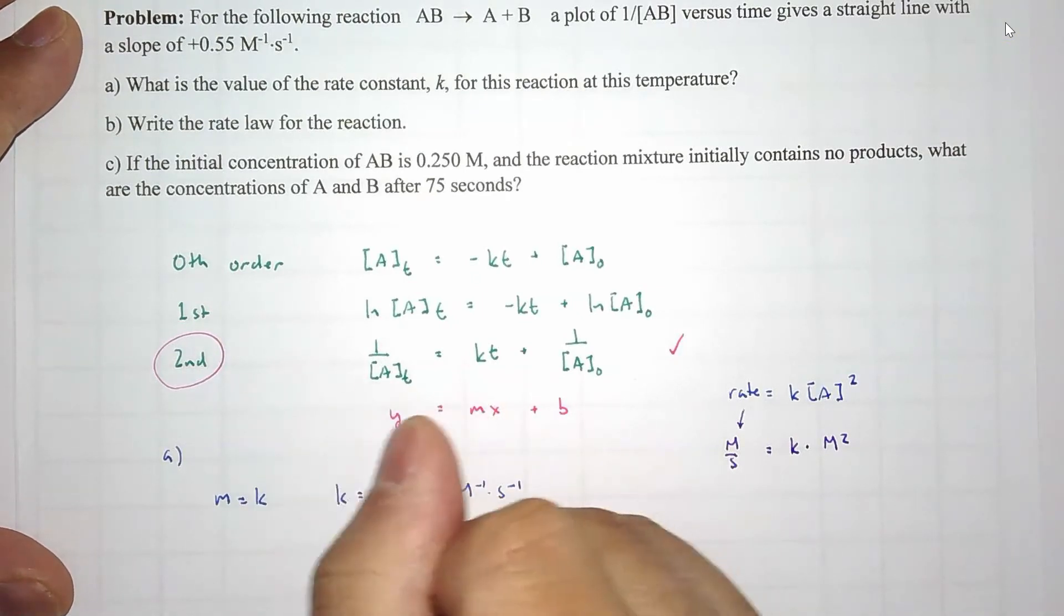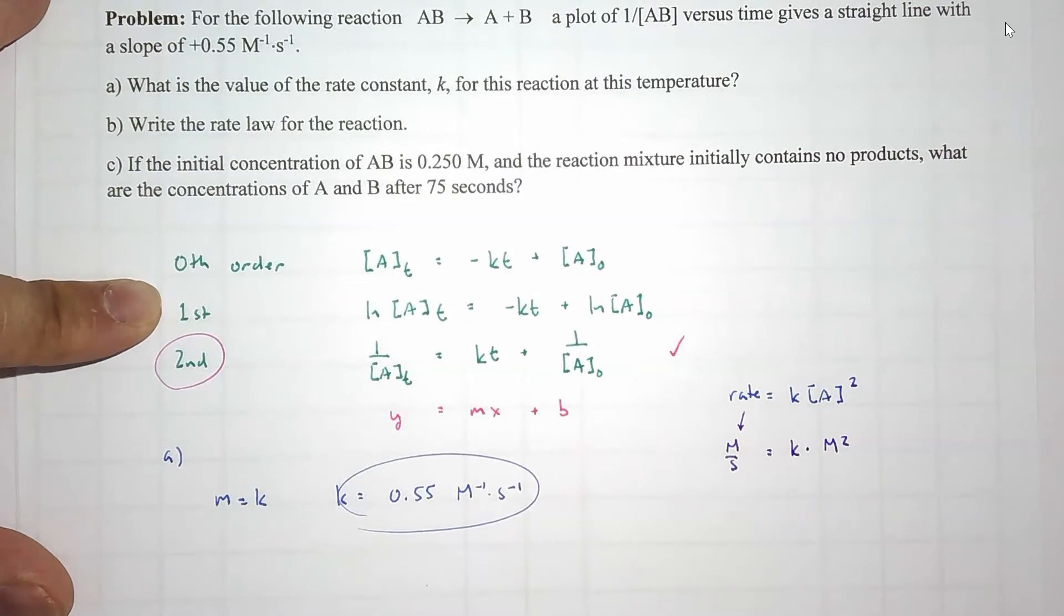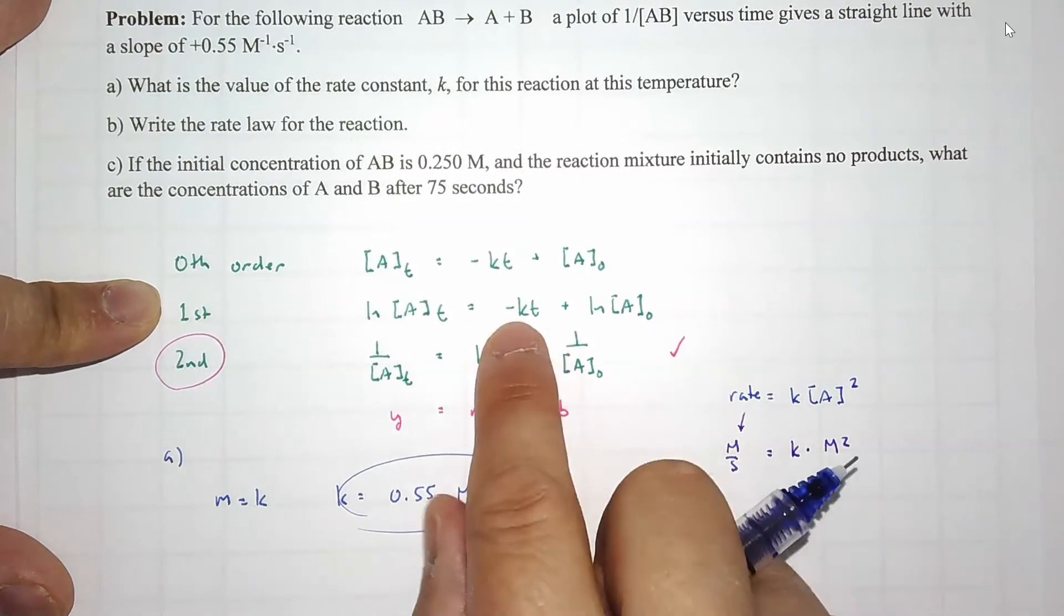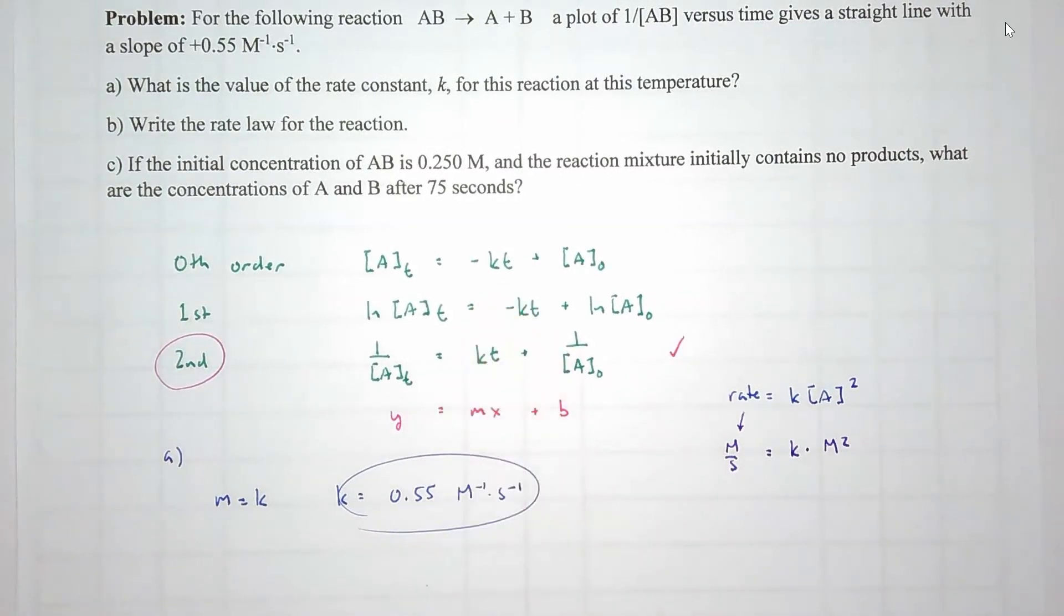Pretty simple. If it was zeroth order or first order, we'd have to take negative of that, because slope equals negative k.